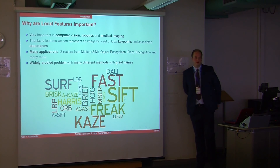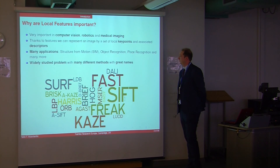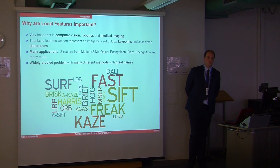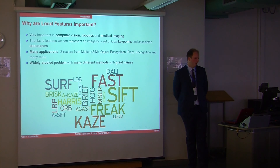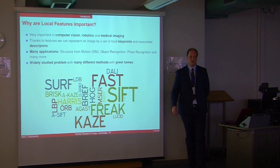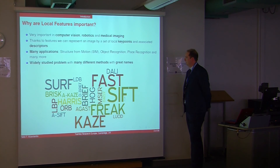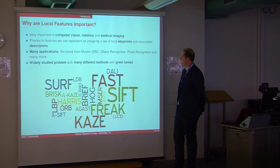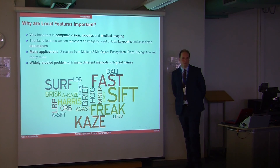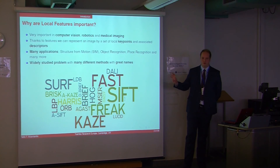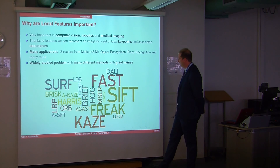Local features are very important in many fields: computer vision, robotics, and medical imaging. One reason features are so important is that we can compress the content of a whole image using a set of keypoints and their appearance descriptors. There are many applications nowadays, such as structure from motion and recognition. It's been a well-studied problem in computer vision for about 20 years.